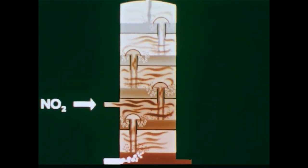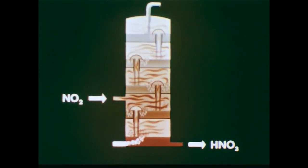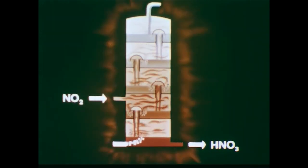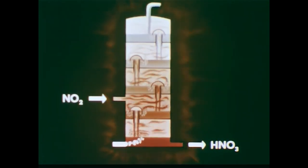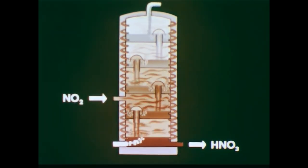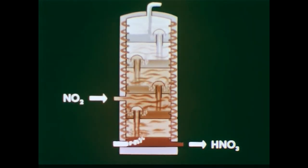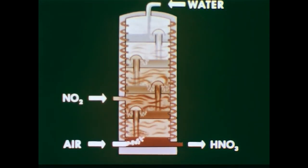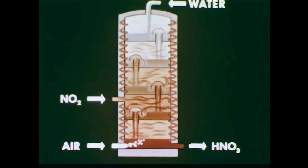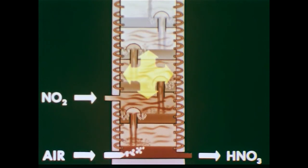Le Chatelier's principle is applied to achieve a maximum yield of nitric acid at equilibrium. Since the reaction gives off heat, the formation of nitric acid is favored by removing heat — cooling coils surround the column. Also, the reactants are kept at high concentration by adding excess air at the bottom of the column and water at the top. And finally, since we are forming a liquid from gases, the operation takes place at higher than atmospheric pressure.